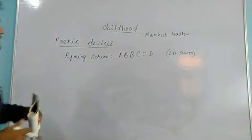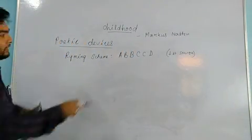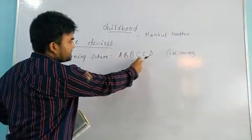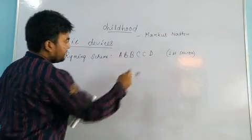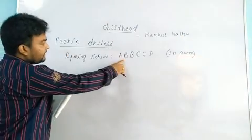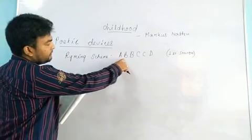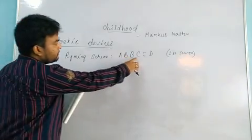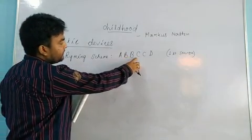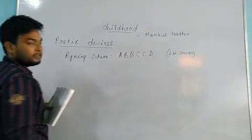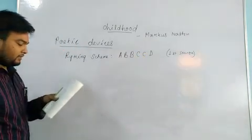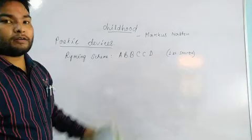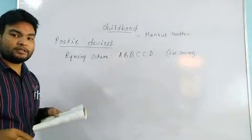Here you can see the rhyming scheme: A, B, B, C, C, D — meaning the second line will rhyme with the third line, and the fourth line will rhyme with the fifth line. This is the rhyming scheme of the first stanza of the poem Childhood.